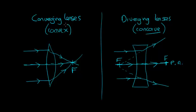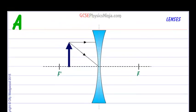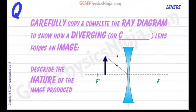So that's the difference between a converging lens and a diverging lens. Let's take a look at this flashcard about diverging lenses. Carefully copy and complete the ray diagram to show how a diverging or concave lens forms an image. We need to describe the nature of the image produced.